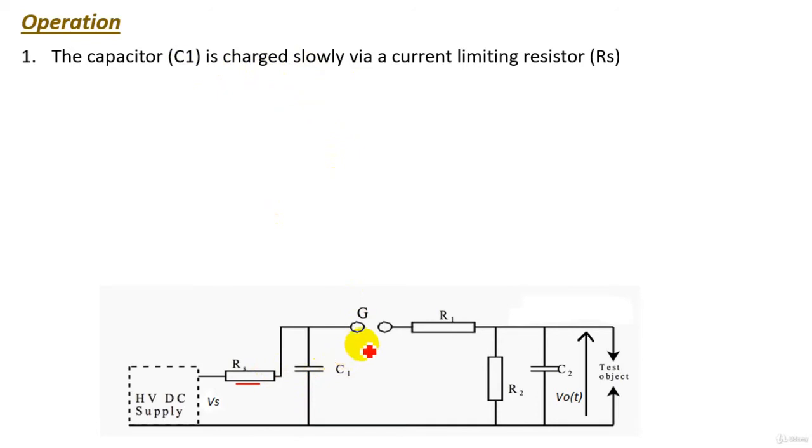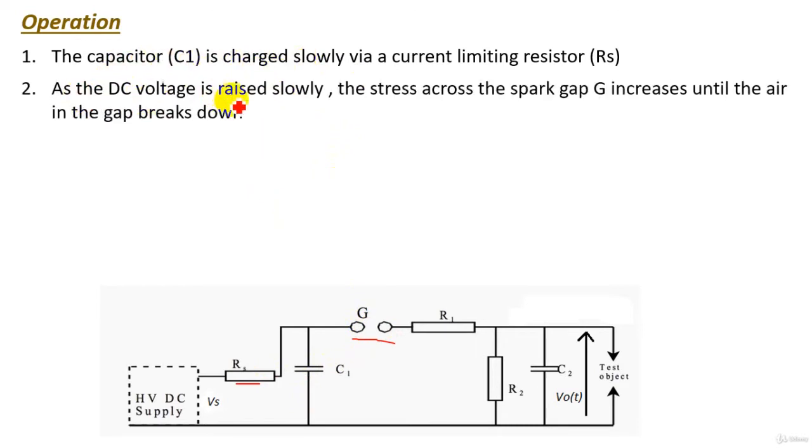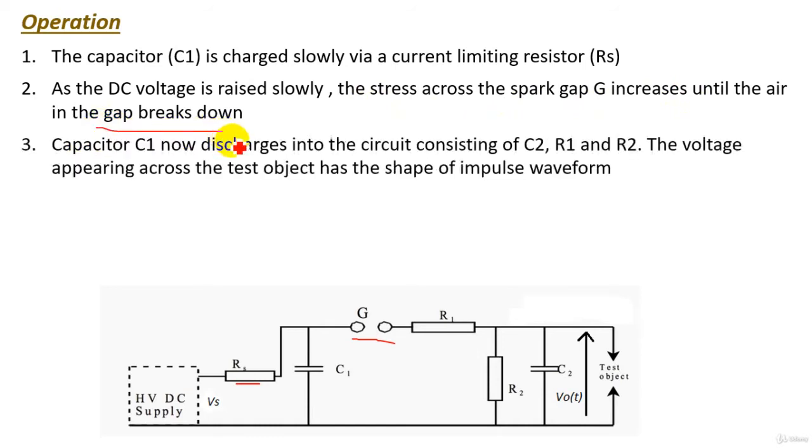And also the spark gap here, the stress or the voltage across the spark gap increases as the capacitor C1 is charged. As the DC voltage is raised slowly, the stress or the voltage across the spark gap increases until the air in the air gap breaks down. When the air breaks down, the spark gap now conducts and the capacitor C1 now discharges into the circuit which consists of C2, R1 and R2.